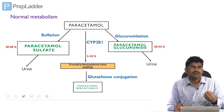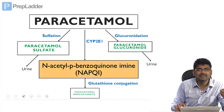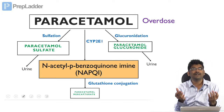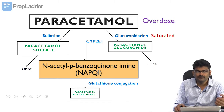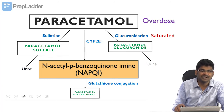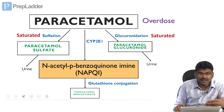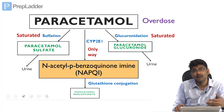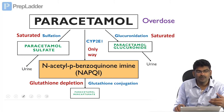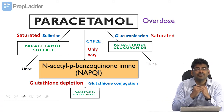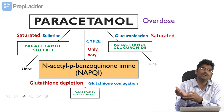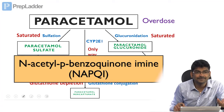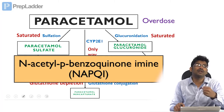When excess paracetamol is given — paracetamol overdose — glucuronidation and sulfation enzymes have a limit. After some point, these enzymes become saturated. The only remaining pathway is the cytochrome P450 mediated mixed function oxidase reaction. As a result, N-acetyl para-benzoquinone imine (NAPQI) is produced in excess amounts. This causes glutathione depletion because all the glutathione is used up in the conjugation reaction, and finally this reactive molecule accumulates.